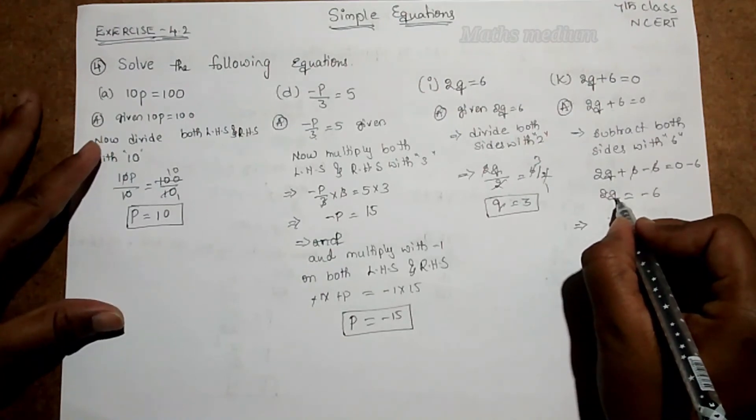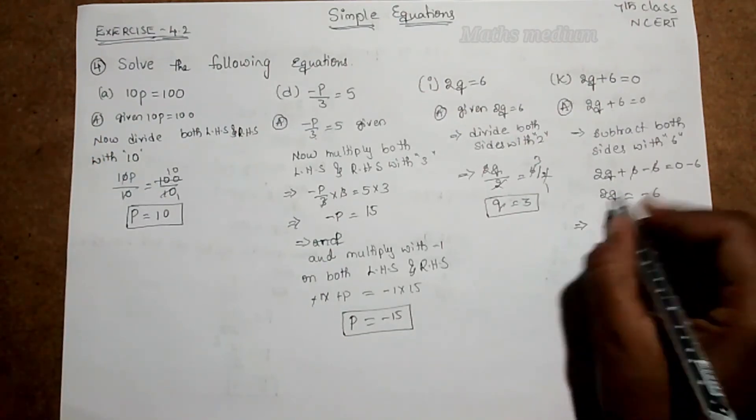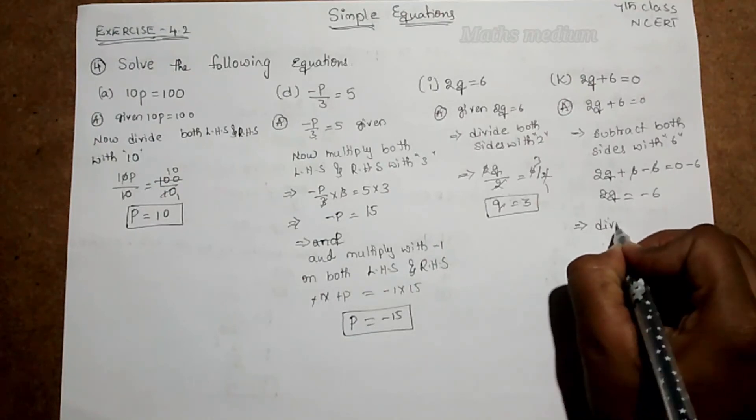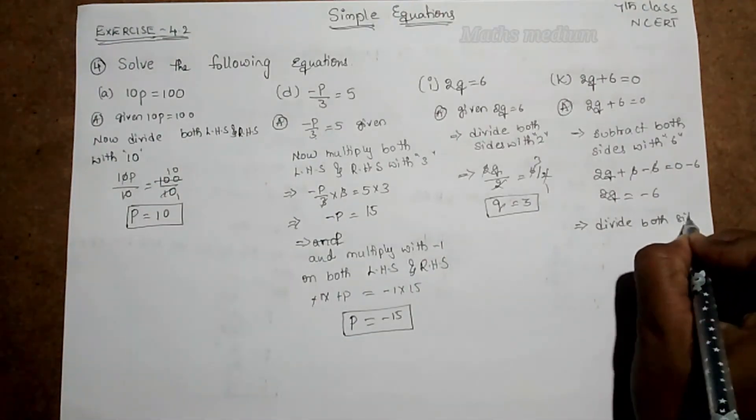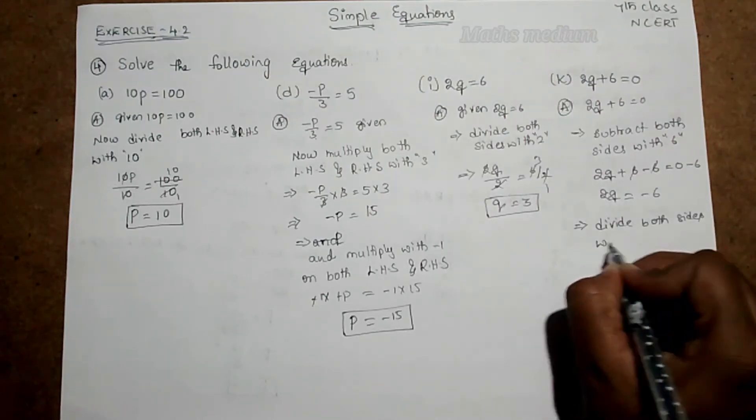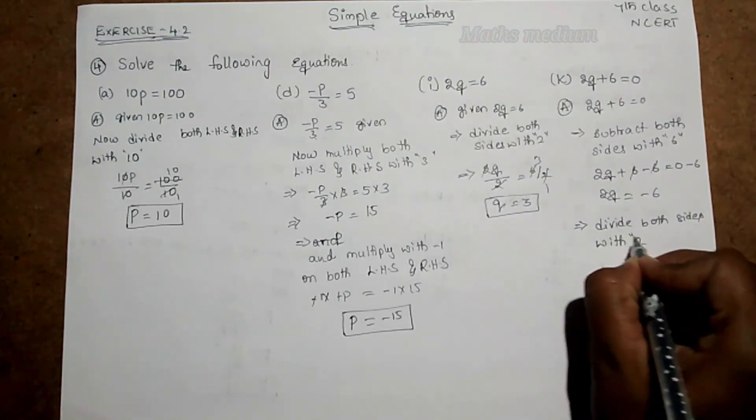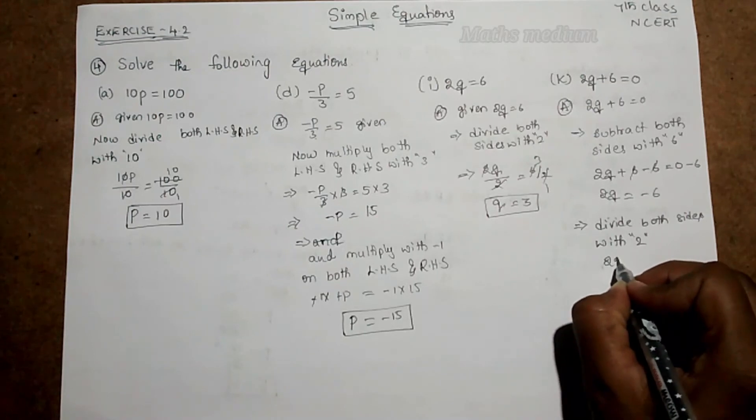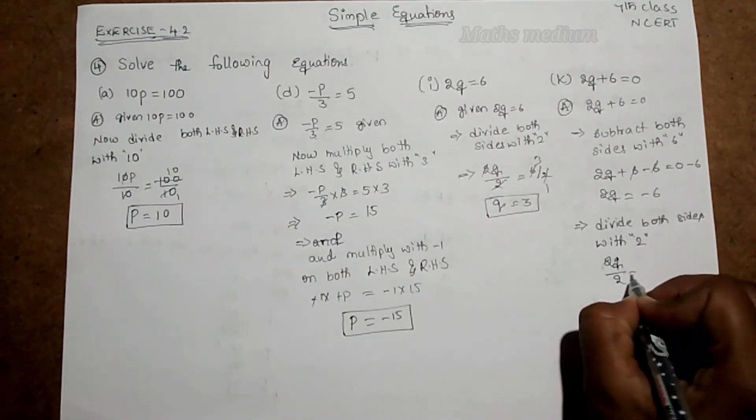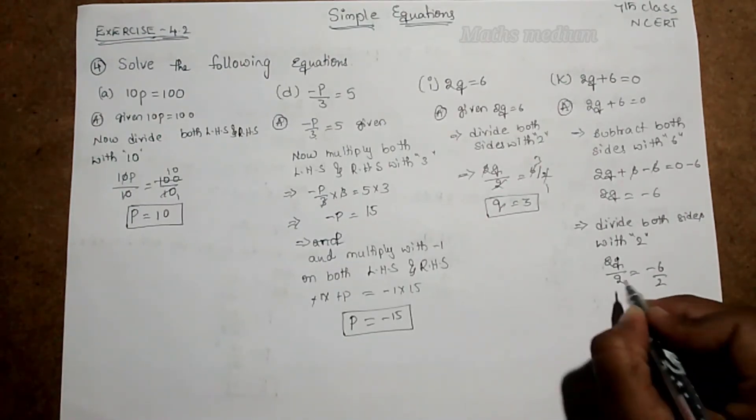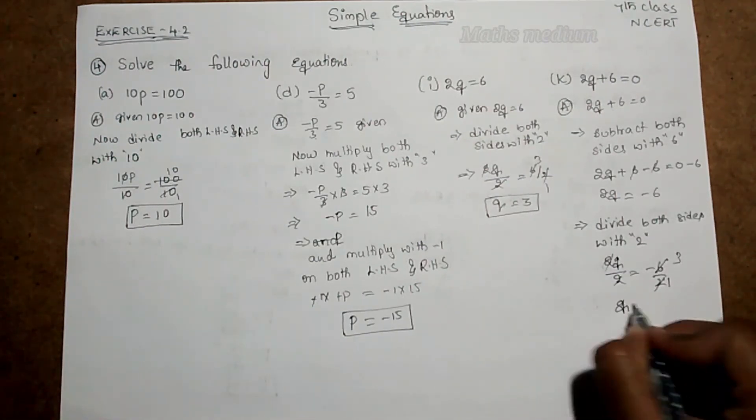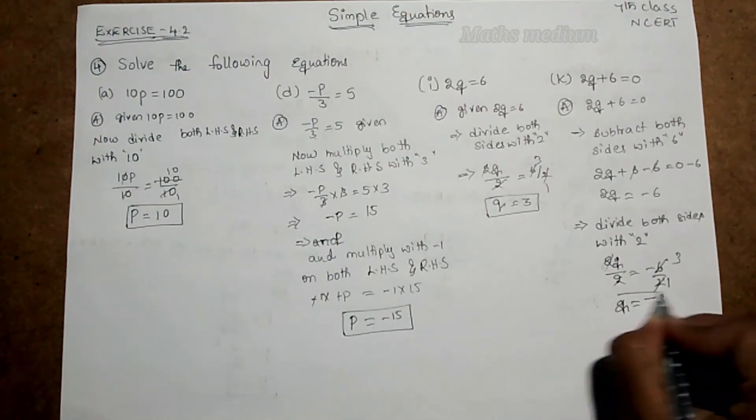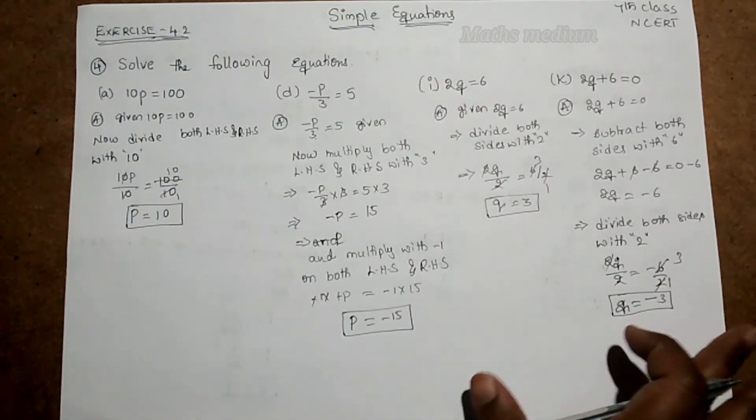Now another step. This variable is multiplying with 2, so we have to divide with 2. So divide both sides with 2. So now 2q by 2 is equal to minus 6 by 2. So 2 and 2 get cancelled. 2 ones are 2, 3s are 6. So q is equal to minus 3 here. So this is the answer.